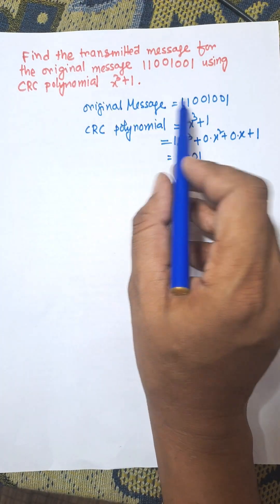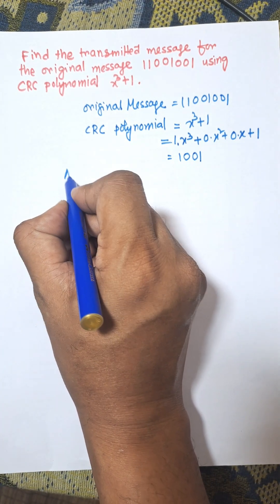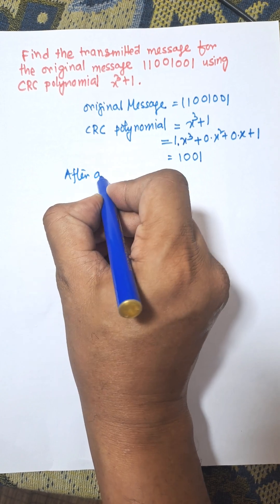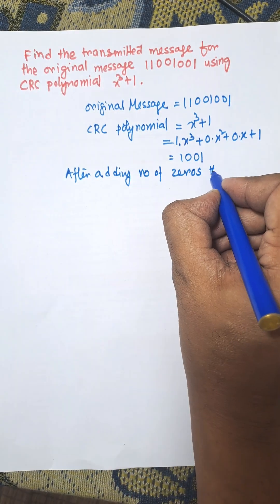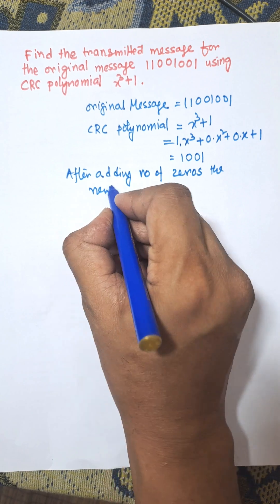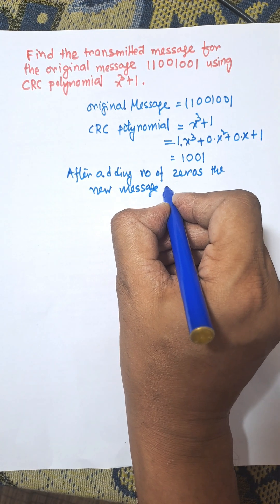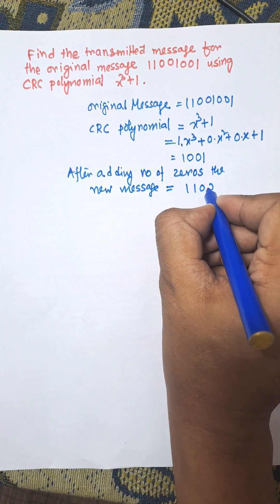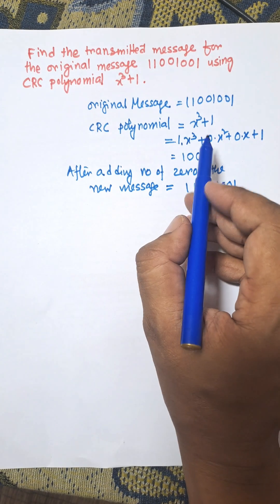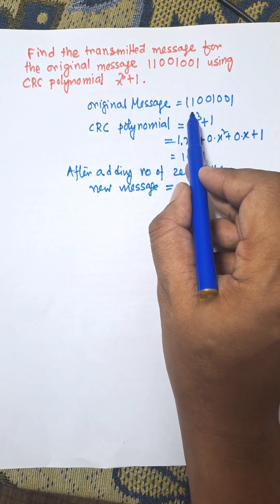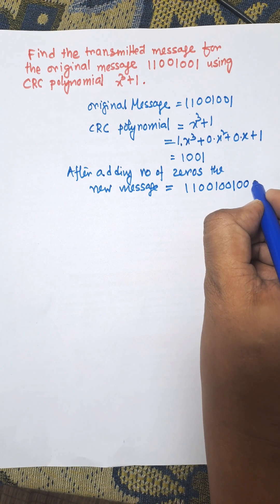Add number of zeros to the original message. After adding zeros, the new message equals 11001001000. The maximum degree of the polynomial is 3, so three zeros will be added.